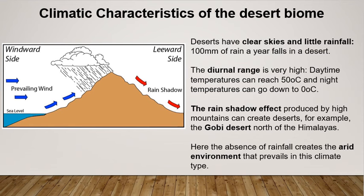What are the climatic characteristics of the desert biome? Deserts have extremely clear skies and little rainfall — if you're standing in a desert and look up, you'll just see blue skies. The diurnal range is very high. The diurnal range is the range between the coldest and warmest point of the day. In a desert, temperatures can be up to 50 degrees Celsius at midday and down to around zero degrees at nighttime — a 40 to 50 degree diurnal temperature range, which is unbelievably high compared to somewhere like Ireland with only an 8 to 10 degree range.